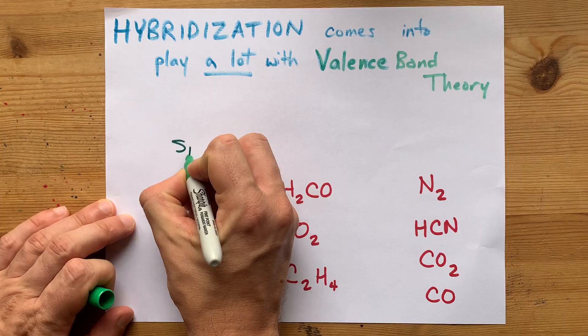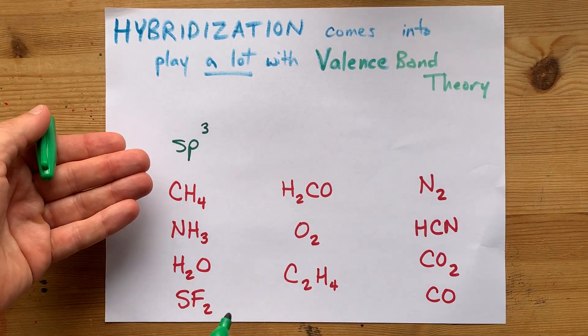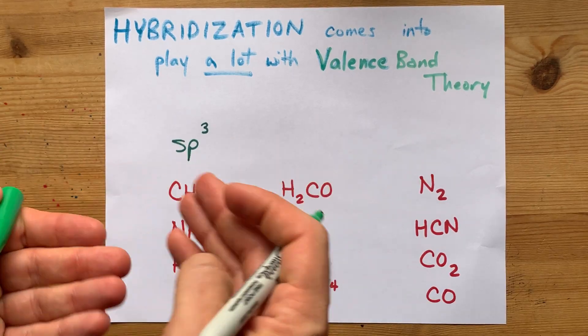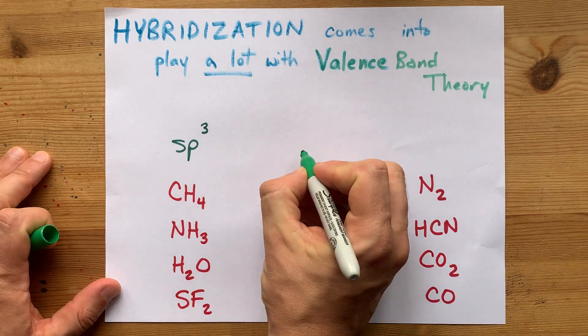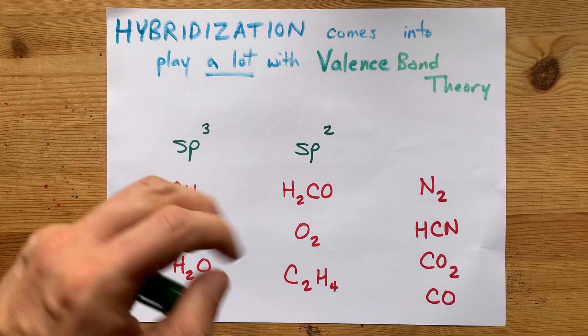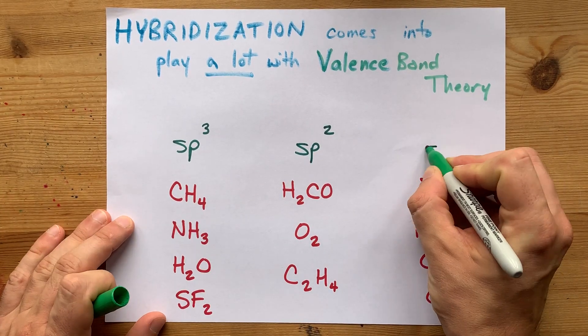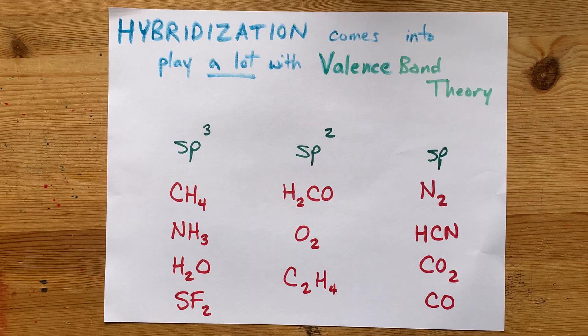And there are three main types of hybridization that you're going to need. You're going to need something called sp3 hybridization. And if you have four sigma bonds, or only sigma bonds and lone pairs in your molecule, if you have a single pi bond on your molecule, you're probably going to need sp2 hybridization. And if you have two pi bonds, you're going to need something called sp hybridization. I've got a video about hybridization if you want to check that out.